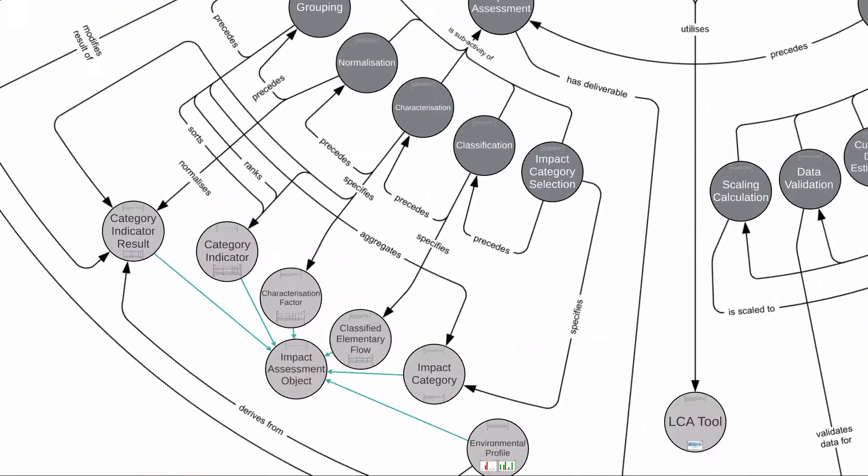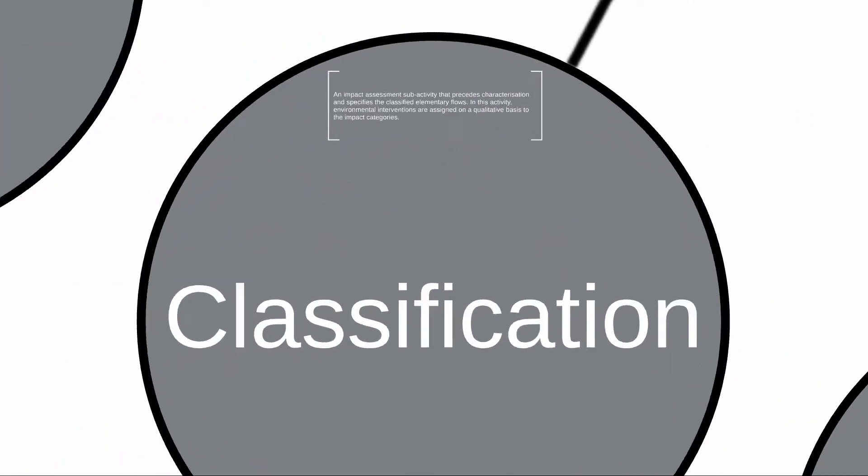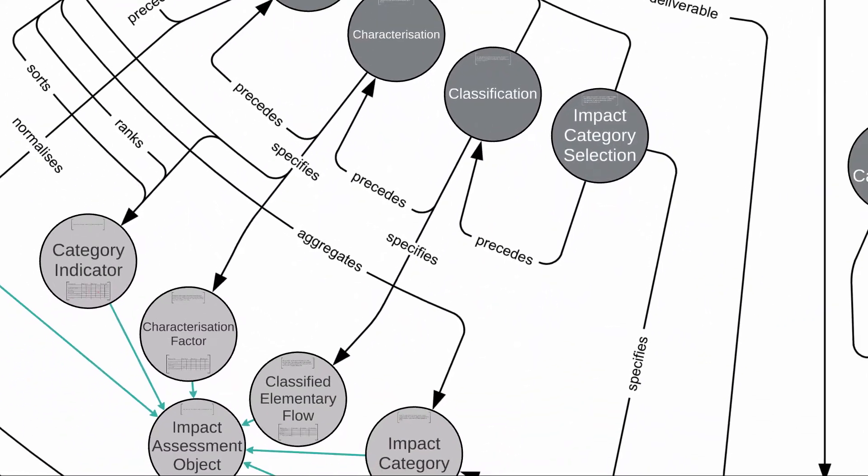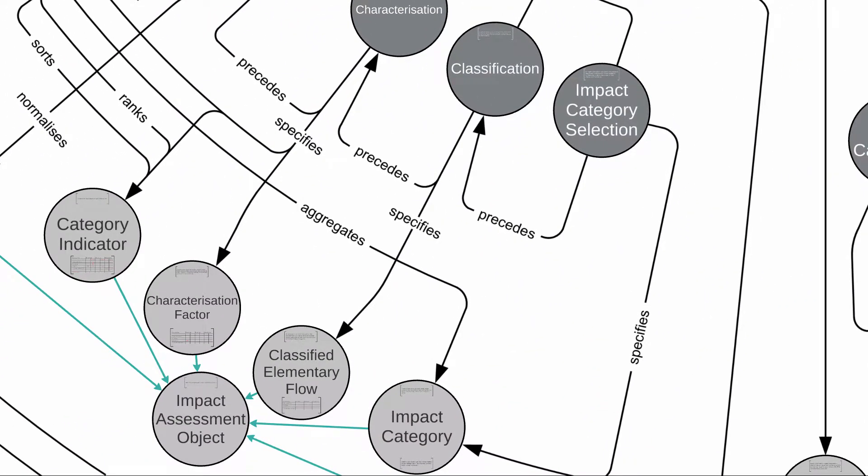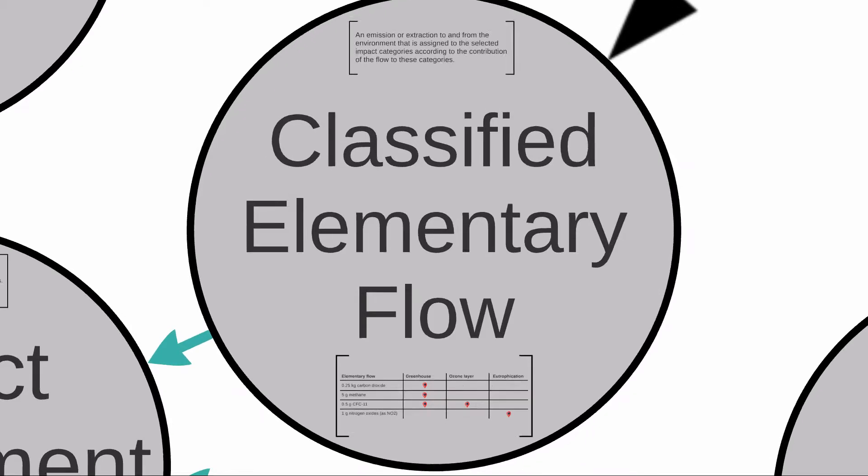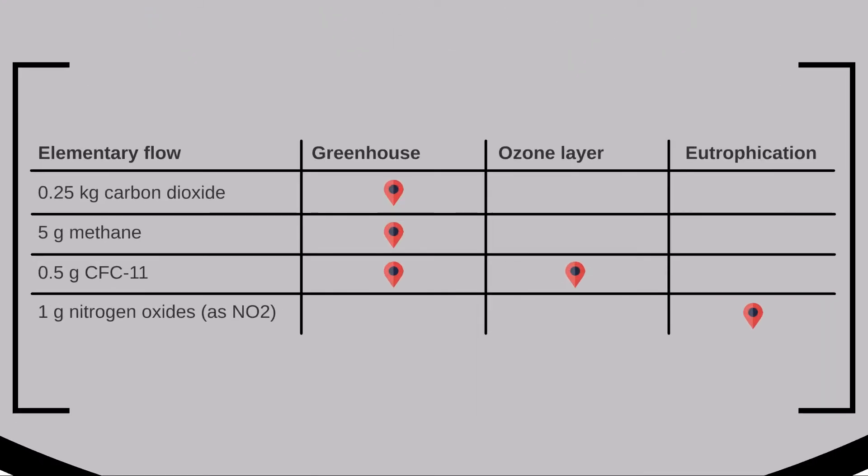We then have the concept called classification, which is the activity of itemizing various elementary flows that represent emissions and extractions to and from the environment. Furthermore, this activity specifies the classified elementary flows, in other words, identifying where these elementary flows participate in the impact categories. For example, this is a sample of information where we've identified four elementary flows, their implicated amounts, and marked their participation in three impact categories.